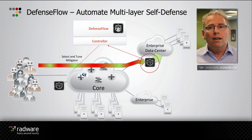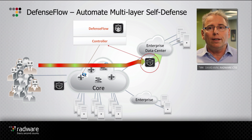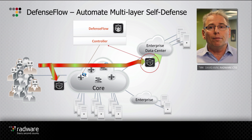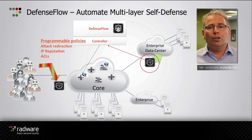The Defense Flow will utilize behavioral algorithms in order to detect attacks. In the case of an attack detection, we move from peacetime into attack time. The Defense Flow will then create a set of operations to address and mitigate the attack: first, selecting a mitigation device in the network and tuning parameters based on feedback from the detection algorithm; secondly, it will change programmable policies in the network such as traffic redirection, IP reputation, and activating ACLs.